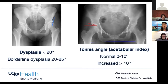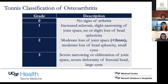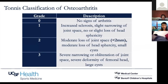We also grade osteoarthritis changes in the hip using the Tönnis classification: grade 0 is no signs of arthritis, grade 1 is slightly increased sclerosis, grade 2 is joint space loss greater than two millimeters, and grade 3 is severe narrowing or obliteration of the joint space. I think of it as: one is sclerosis, two is joint space loss greater than two millimeters, three is joint space obliteration.